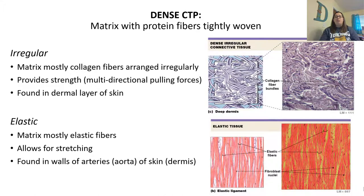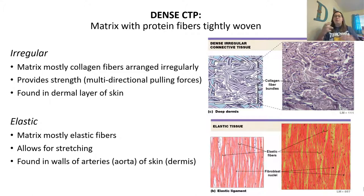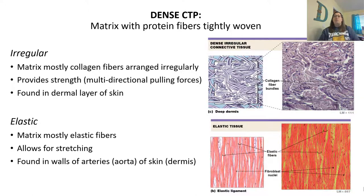Elastic dense connective tissue has a matrix mostly of elastic fibers, so the purpose is stretching rather than just strength. It's found especially in the walls of arteries like the aorta, because blood coming through needs to stretch them. It's also found in the dermis of the skin, though we start to lose this tissue as we grow older, which is why skin is not as elastic and won't stretch back as well with age.